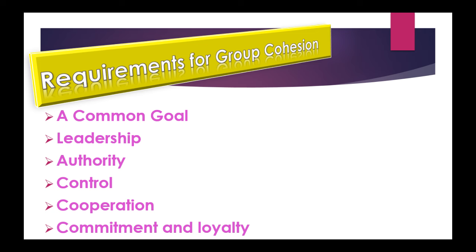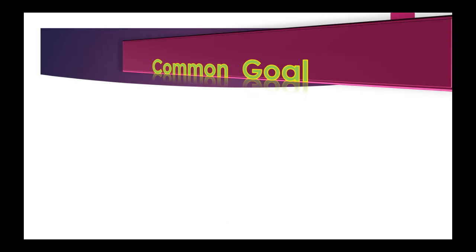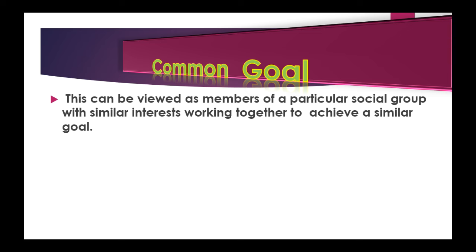Moving on to the first factor: a common goal. This can be viewed as members of a particular social group with similar interests working together to achieve a similar goal. People are often drawn to a group if they see that it helps achieve a goal that is important to them. Provided the goal remains valid and the members can see that the group is working to achieve that goal, they will remain committed to the group.